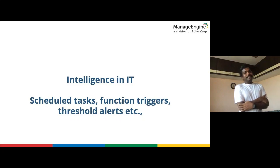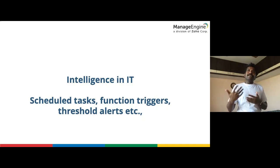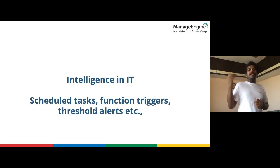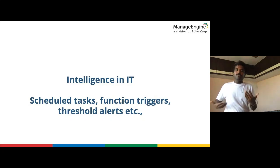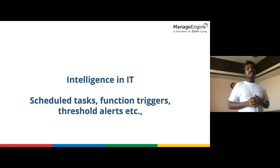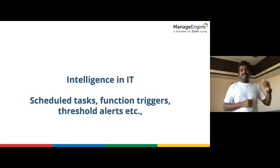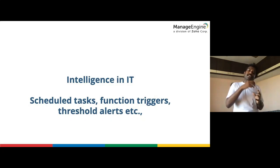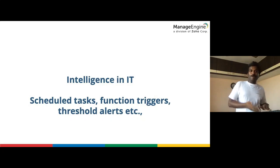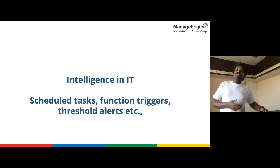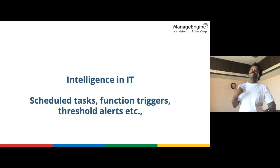The word 'intelligence' has been overused over the last decade in IT management. For example, a scheduled task — every Wednesday at 9 AM you run this task, every Monday you clean the printer's cache — that would auto-run without human intervention, and we tagged it intelligence. You can also have function triggers: when the printer is printing more than 100 pages an hour, restrict printing for 30 minutes. These are called intelligent function triggers, where you set predefined thresholds.